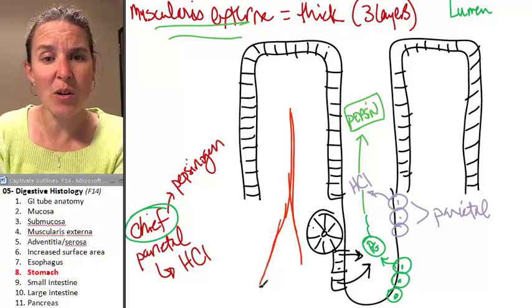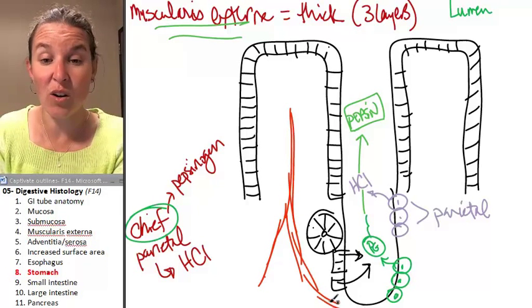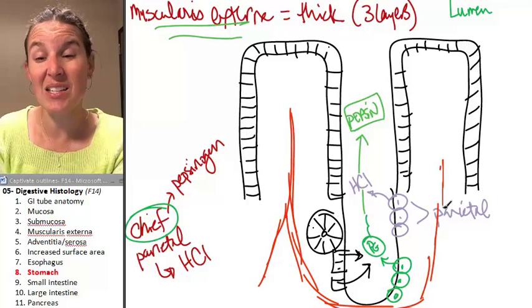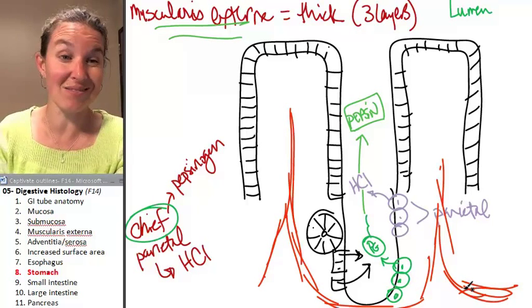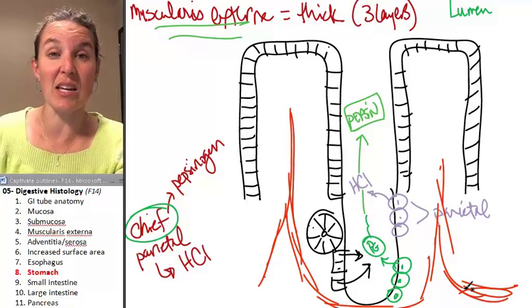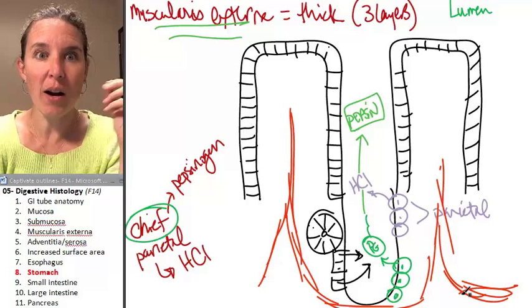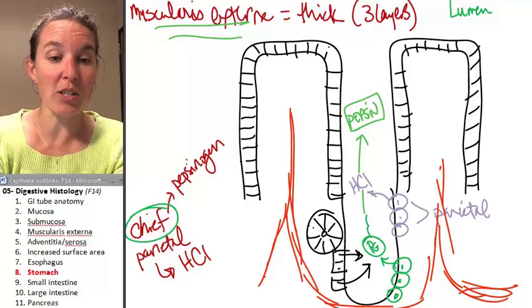Sometimes my muscularis mucosae is actually thicker in the stomach, sometimes not so much, but then the muscularis externa, you sometimes can see all three layers. All right, let's go see how we can tell the different parts of our small intestine.